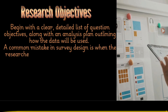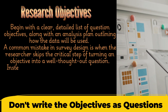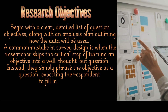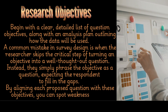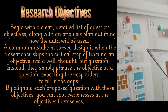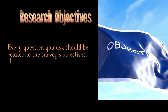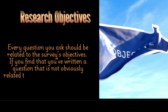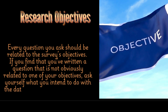A common mistake in survey design is when the researcher skips the critical step of turning an objective into a well-thought-out question — instead, they simply phrase the objective as a question. By aligning each proposed question with the objectives, you can spot weaknesses in the objectives themselves. Every question should be related to the survey's objectives. If you find a question that is not obviously related to one of your objectives, ask yourself what you intend to do with the data collected from that question.